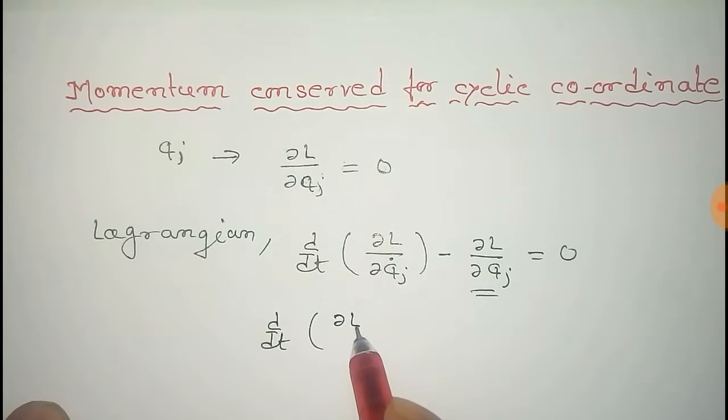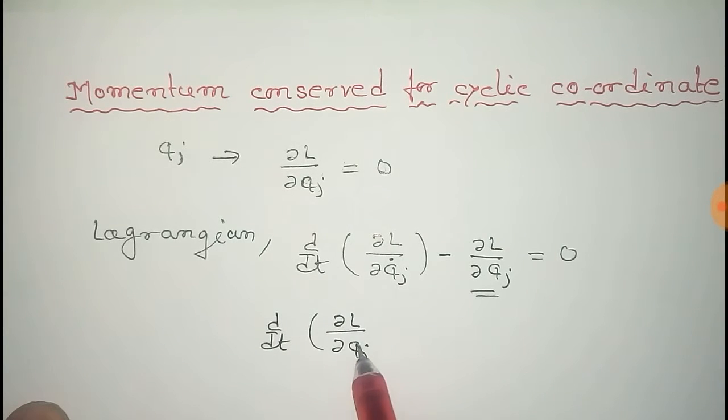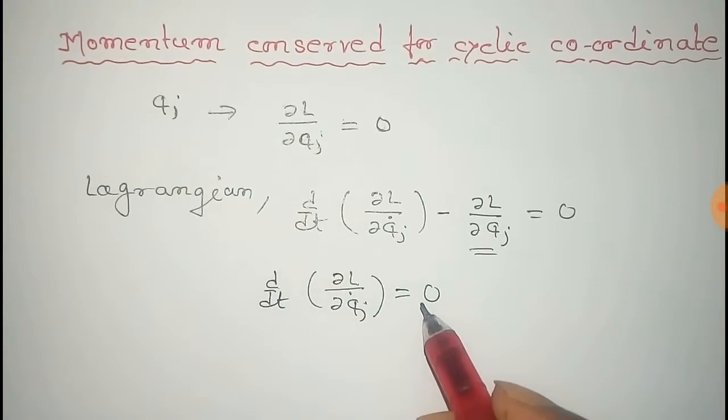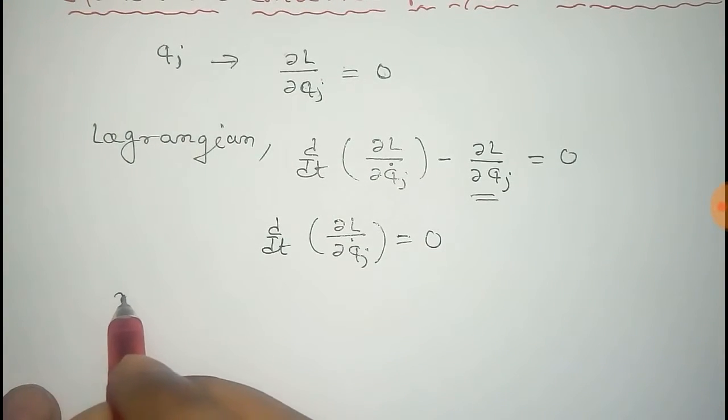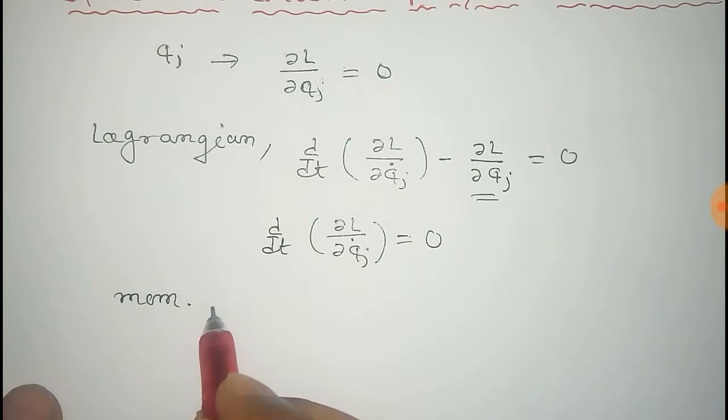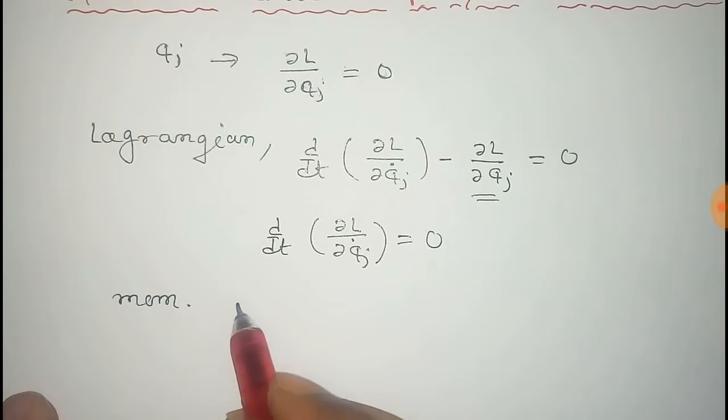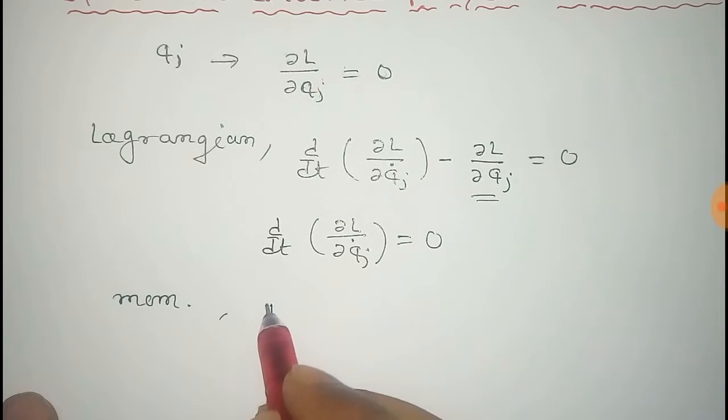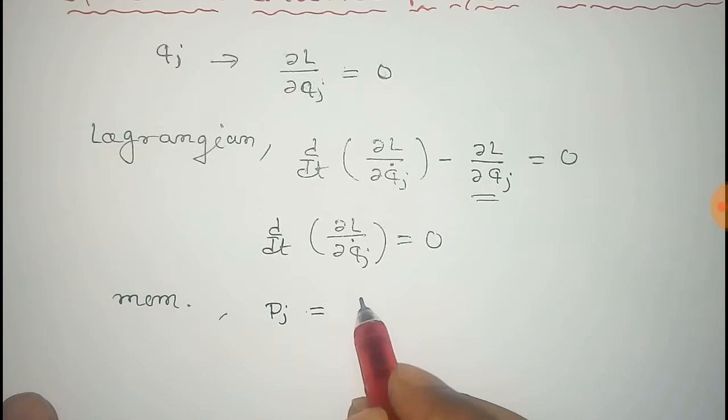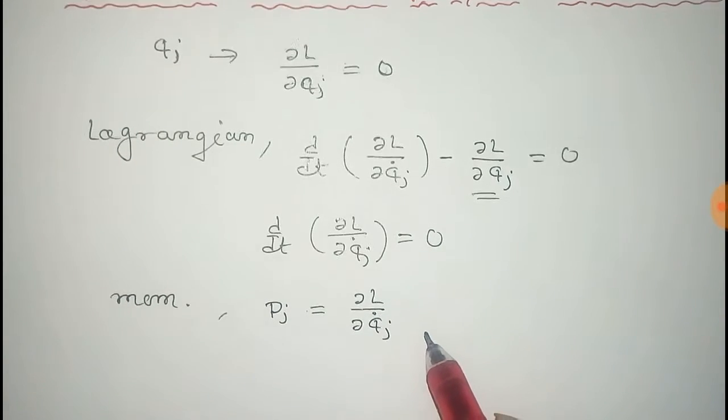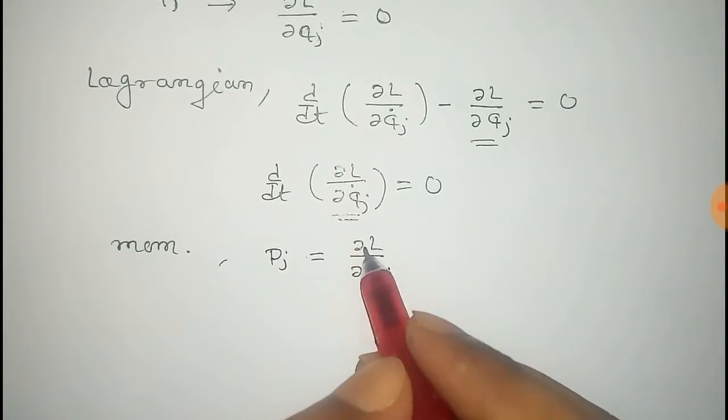Now generalized momentum for the corresponding coordinate is given by pj, that's equal to del L del qj dot. So you can say that this term is the generalized momentum.